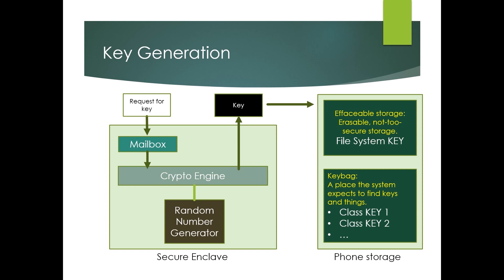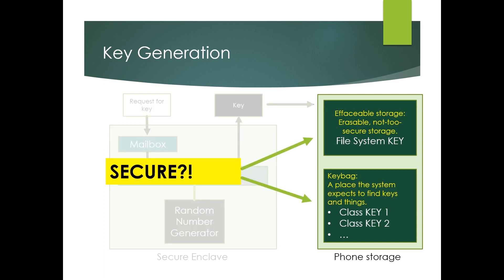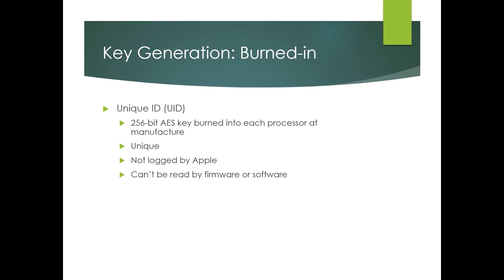You might look at this and think, it just sits in storage — that doesn't seem very secure. Well, what it does is encrypt the keys first using burned-in keys. One of them is the Unique ID, the UID — probably what you've heard the most about. It's a key burned into the processor at the time of manufacture. Each one is different. Apple does not keep track of them, and it can't be read by firmware or software — so it's super secure. This is why when the FBI asked Apple for the encryption key for the San Bernardino phone, Apple said they don't know and have no way of finding out.